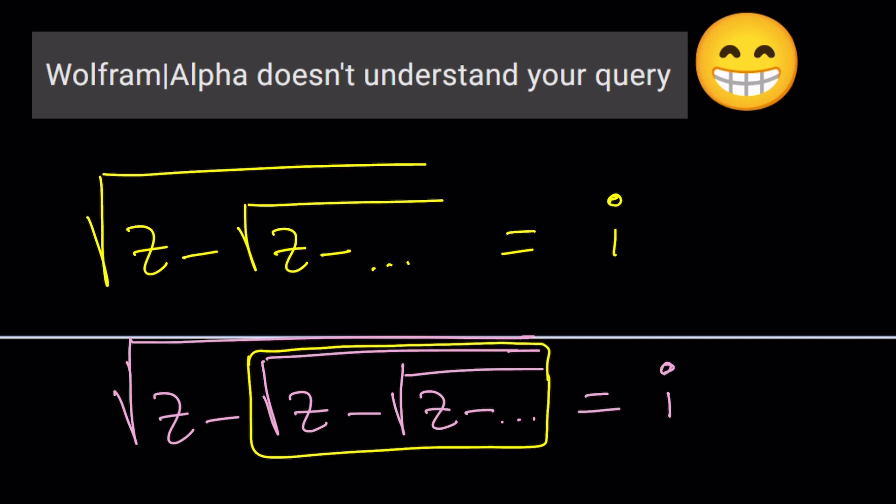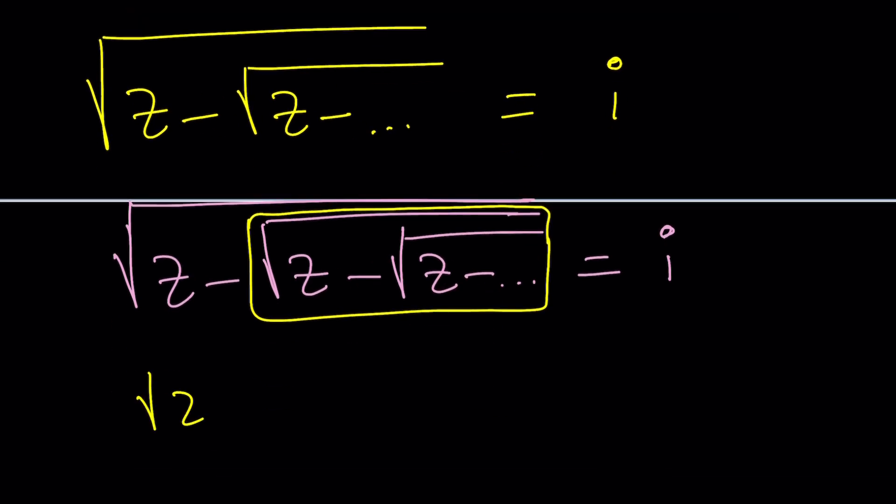So the square root of z minus i equals i. Is there a solution to this equation? Let's find out.